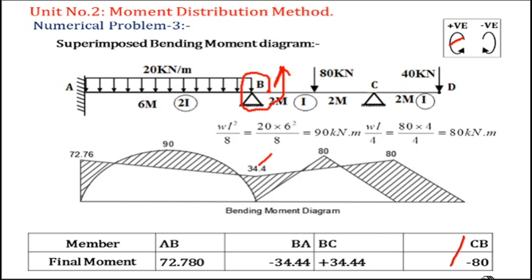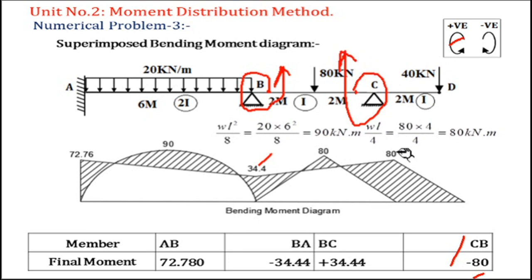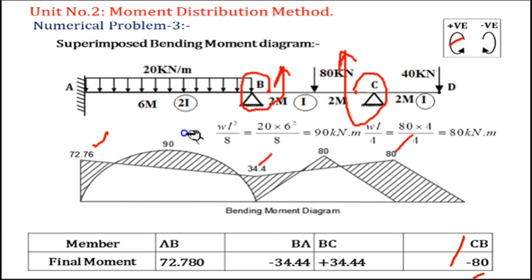For CB the value is minus 80. Keep the pen close to member CB and rotate about C in a clockwise sense, showing 80 upward. These are your end moments. Join them with a line and you will get the final end moment diagram.